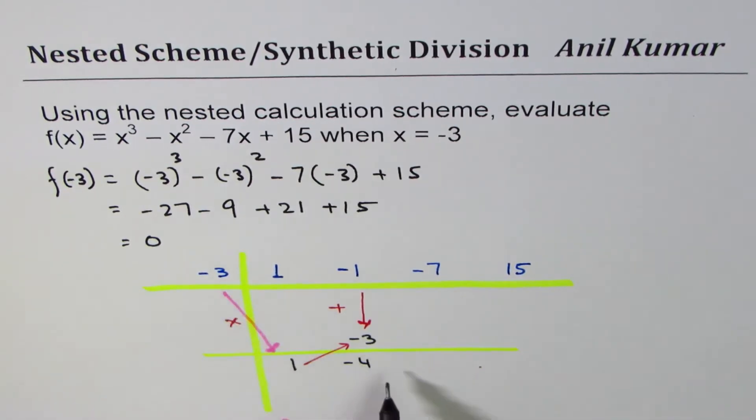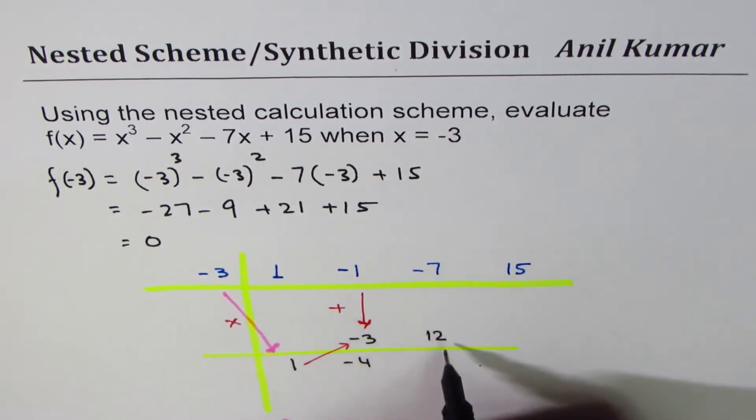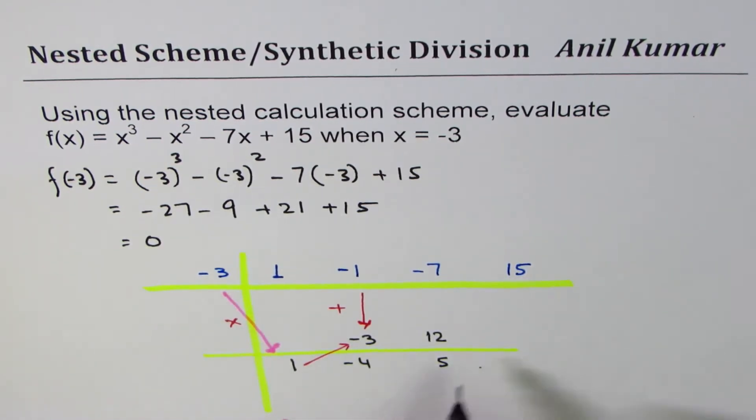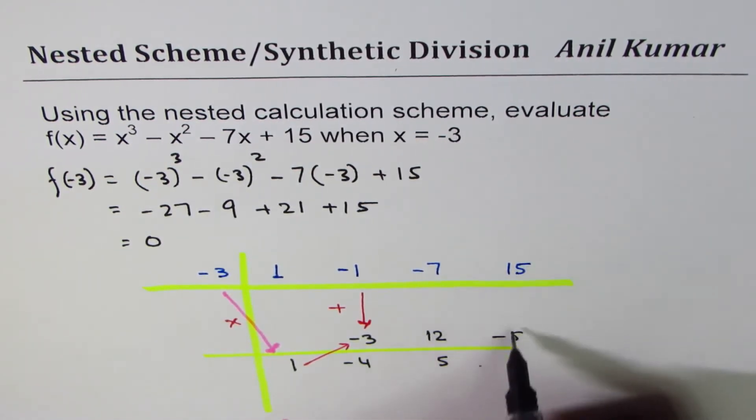Repeat the process. -3 times -4 is +12. Add them, so when you add you get 5. -3 times 5 is -15, and when you add you get 0. So this is the value which we call the remainder when you divide by x + 3.